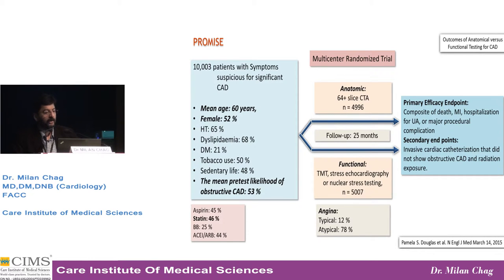This was studied in the PROMIS trial — a large trial of 10,000 patients with symptoms suspicious of significant CAD. Mean age was 60, and 50% of patients were female. Almost the majority had multiple risk factors, and the mean pre-test likelihood of obstructive CAD was about 53%.